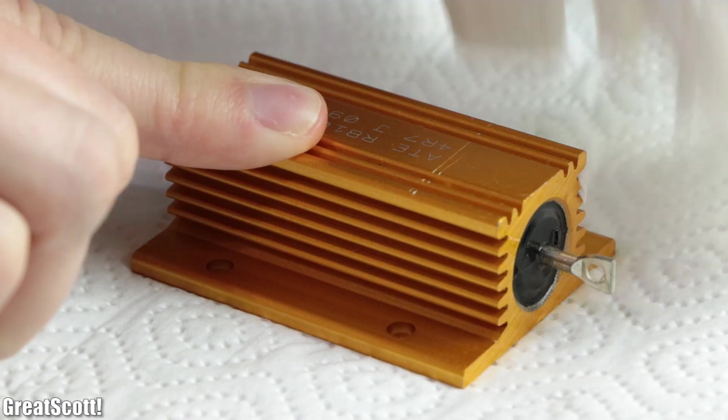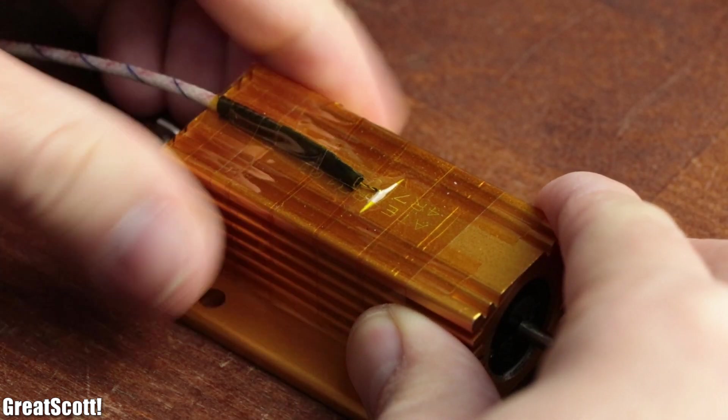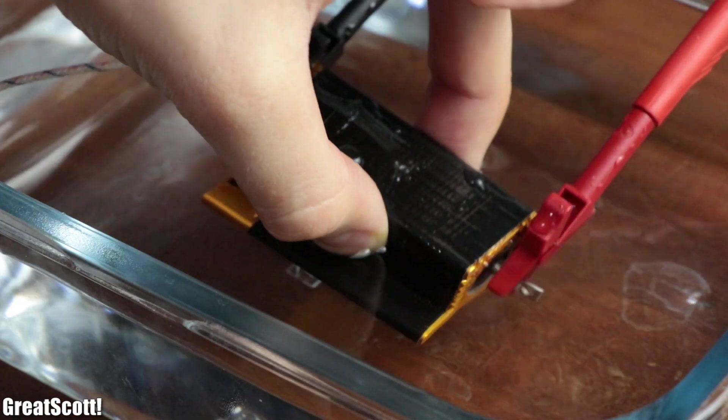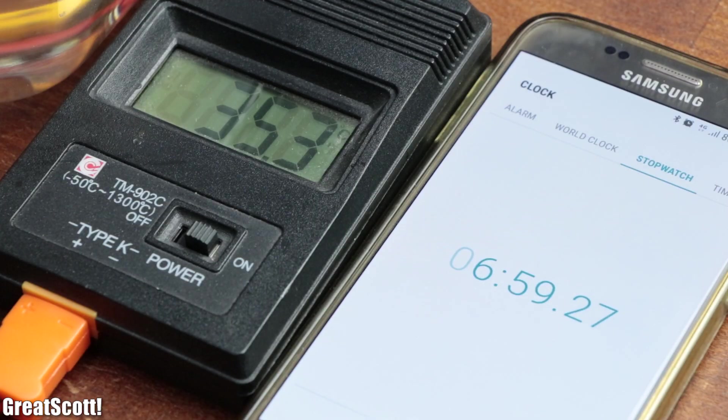So after a small cleaning and cool down session, I once again added the temperature probe to the resistor and repeated the same experiment with distilled water, which gave me an end temperature of 35.3 degrees Celsius.